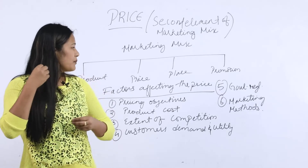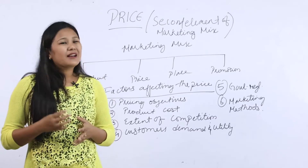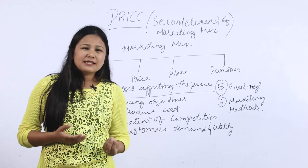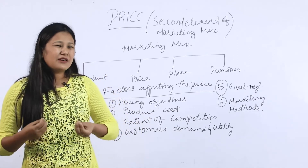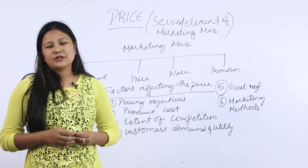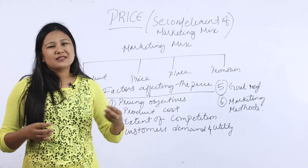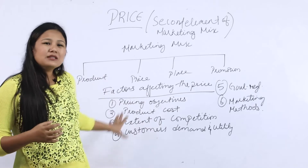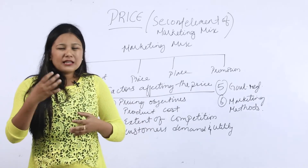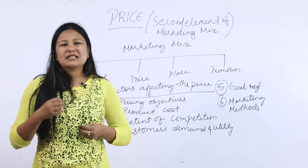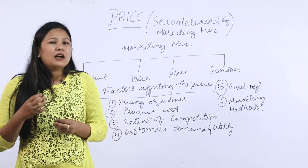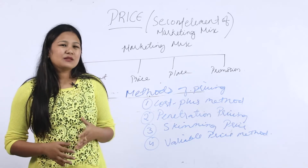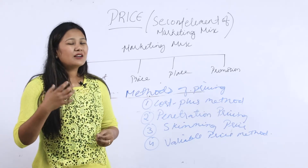The last factor to consider when deciding price is marketing methods — what kind of promotion tools have you used. If you have spent a large amount on advertising your product, you must charge higher prices to cover that cost. All these factors — pricing objectives, product cost, competition, customer demand, government regulations, and marketing methods — must be carefully monitored and considered before deciding the price of a product.